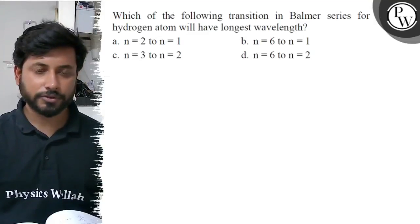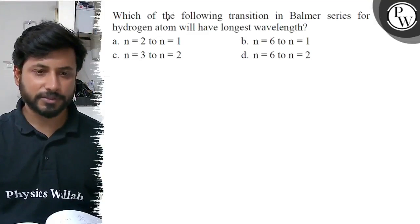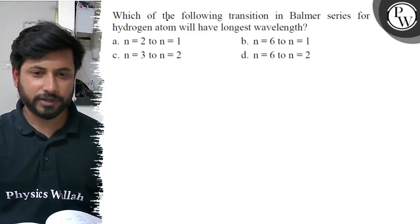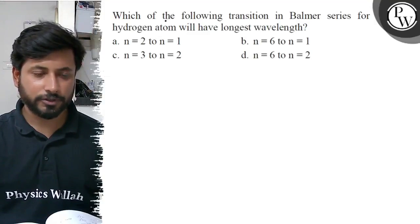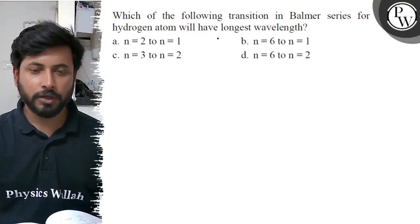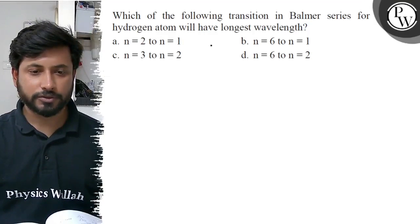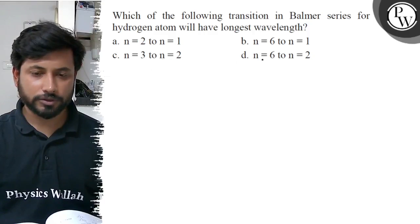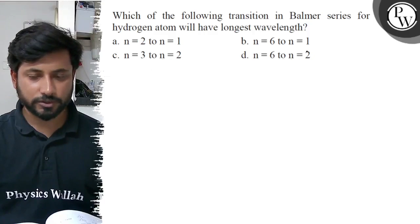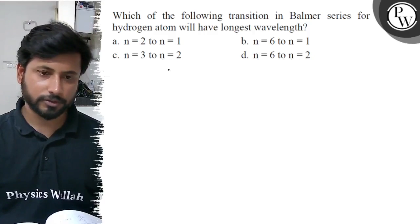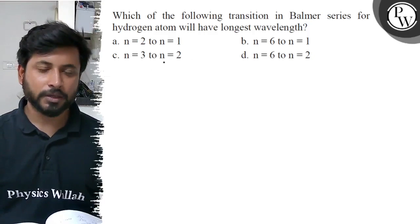Hello students. Let us see this question. Which of the following transitions in the Balmer series for a hydrogen atom will have the longest wavelength? Option A: n equals 2 to 1. Option B: n equals 6 to n equals 1. Option C: n equals 3 to n equals 2. Option D: n equals 6 to n equals 2.